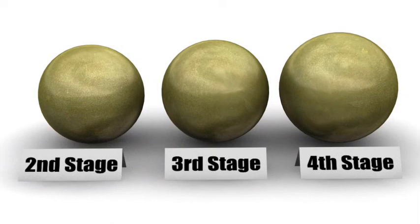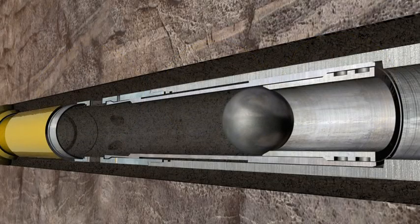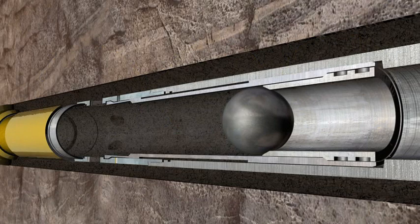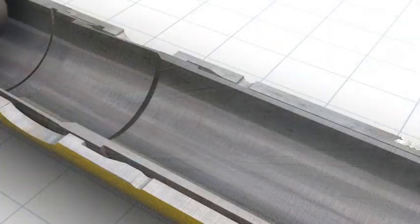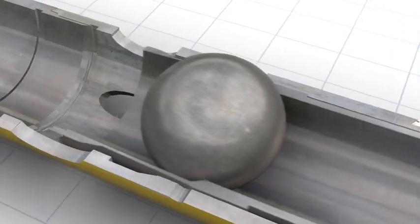The ball and seat serve two main functions. One, it isolates the lower zone from the frack fluid and pressure. And two, it shifts the frack sleeve into the open position.